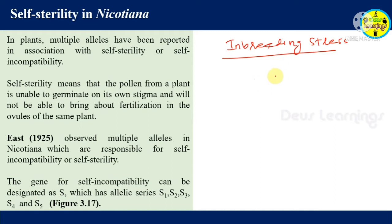Plants have developed a method of self-sterility. In plants, multiple alleles have been reported in association with self-sterility or self-incompatibility. Self-sterility or self-incompatibility means the plant's own pollen cannot fertilize the female part — the stigma — of the same plant.